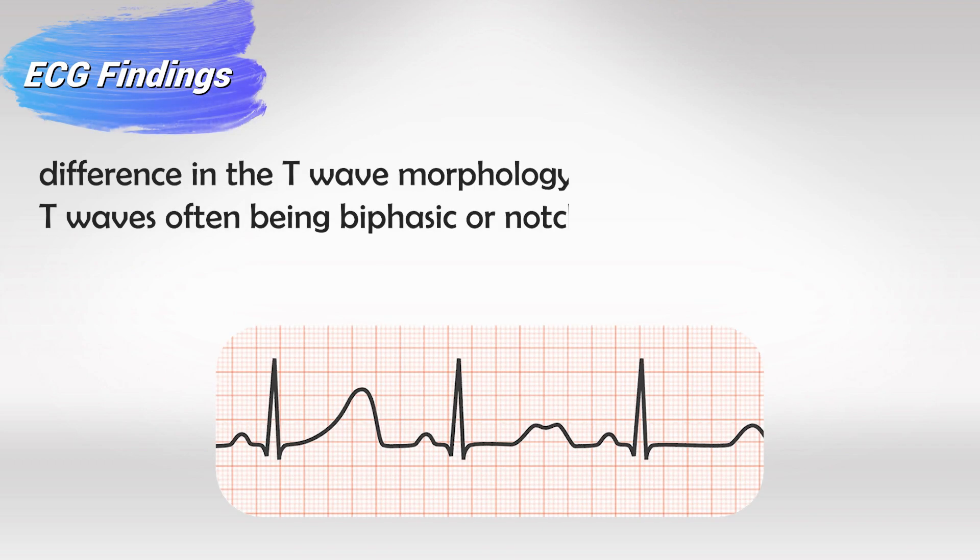Characteristically, in the ECG you will see some changes in the T-wave — it can be either biphasic, or notched, or peaked. This can occur at multiple T-waves, so you'd have different T-waves each presenting with different features.